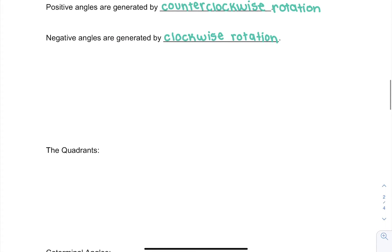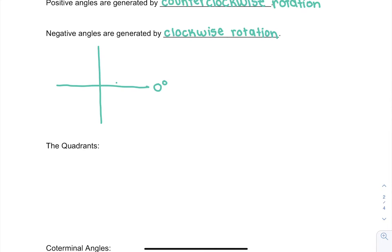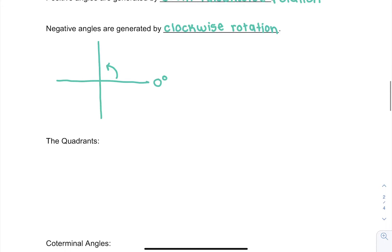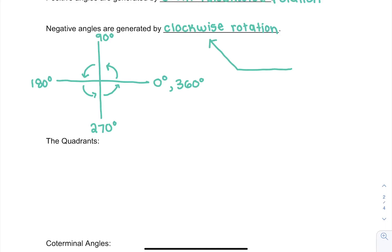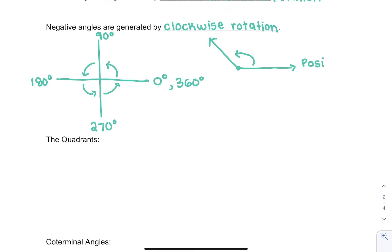On our graph, this is zero degrees. If we rotate 90 degrees counterclockwise, we end up at positive 90 degrees. If we rotate another 90 degrees, we end up at 180 degrees. If we rotate another 90 degrees, we end up at 270 degrees. So if we start at some initial point and rotate counterclockwise, this is a positive angle, and if we rotate clockwise, this is a negative angle.